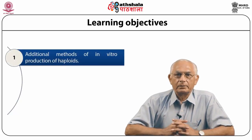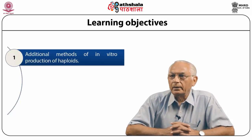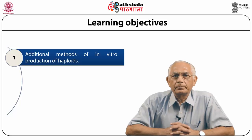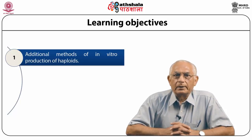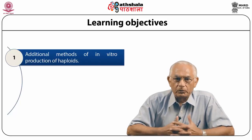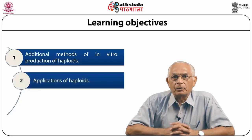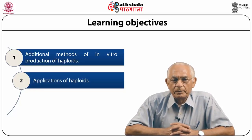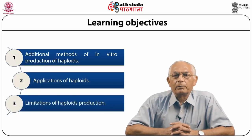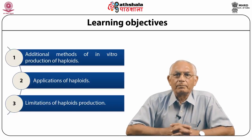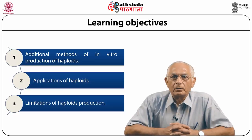In Part 1 of this module, we had learned about anther culture and microspore culture to produce androgenic haploids. In this module, we are going to learn some more techniques to produce haploids in cultures. These are gynogenesis, and the technique of distant hybridization followed by embryo culture. We will also talk about the applications and limitations of all three in vitro methods of haploid production.